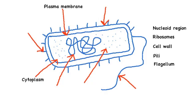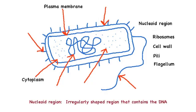Next we have the nucleoid region, and this is an irregularly shaped region that contains the cell's DNA, usually in the form of a circular double-stranded piece of DNA.